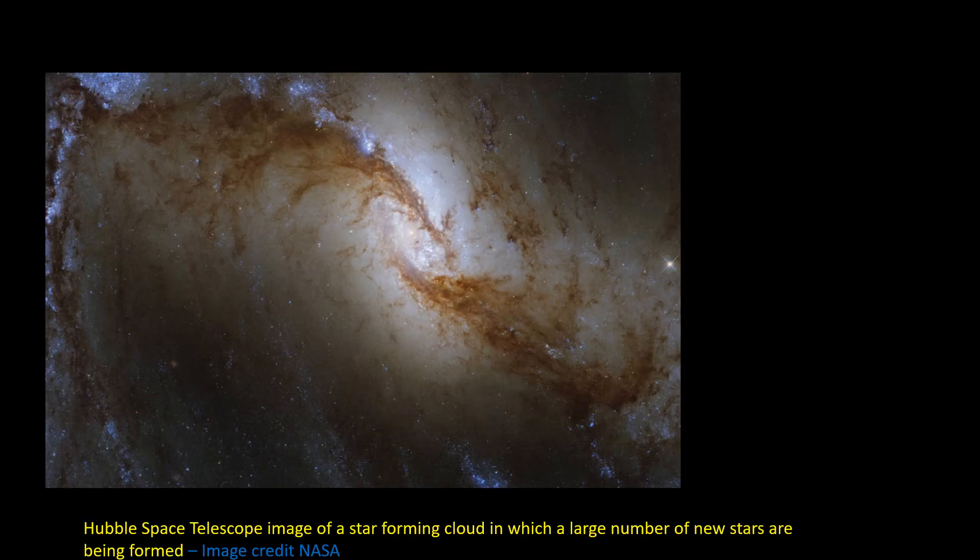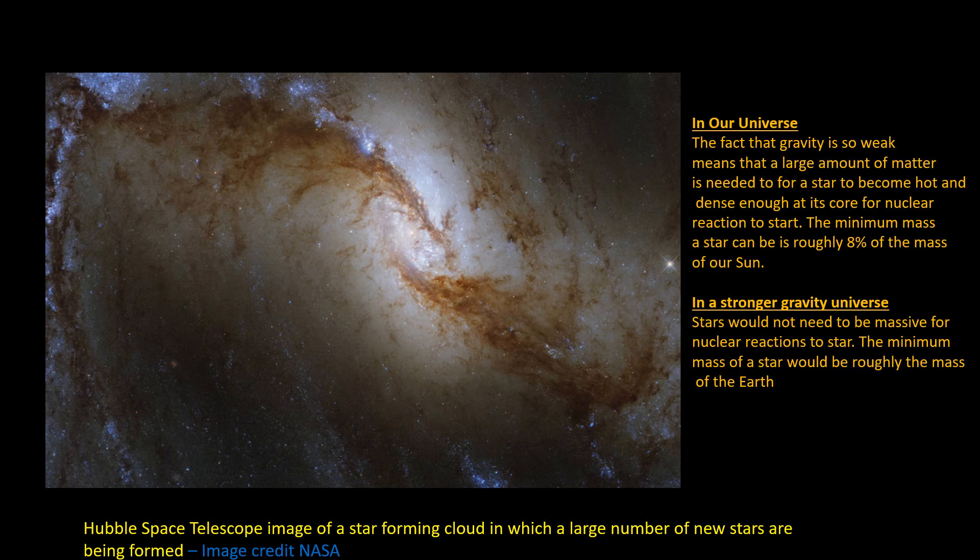However, the physics of large objects which are held together by gravity would be very different. Stars would need 30,000 times less mass to become hot and dense enough for nuclear reactions to start. The reason for this is because the amount of mass needed to form a star scales as the strength of gravity to the power of minus 1.5.